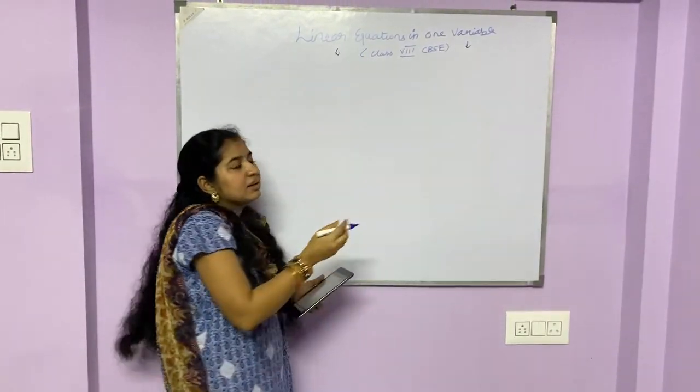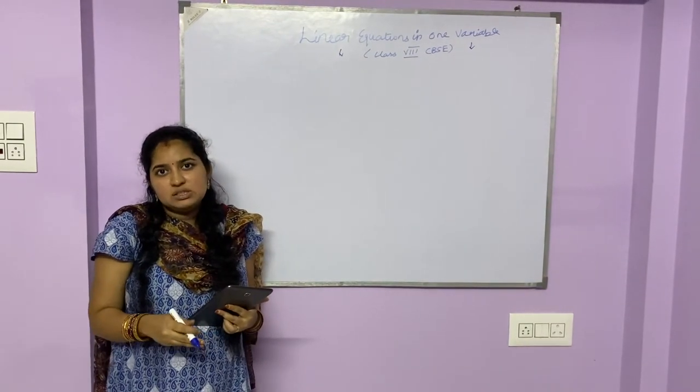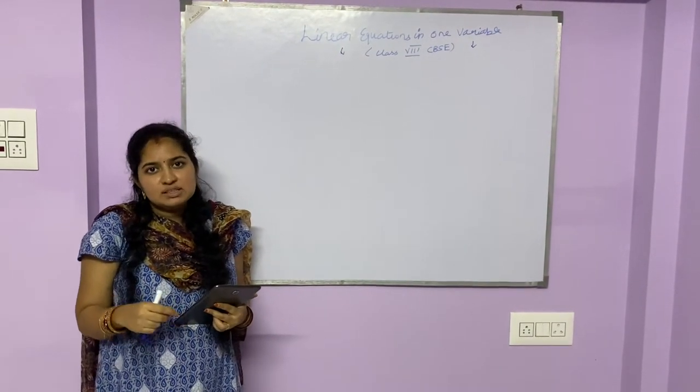The term variable, as the name suggests, is something that keeps on varying, that is it is not constant. It changes with respect to other constraints given in the problem.